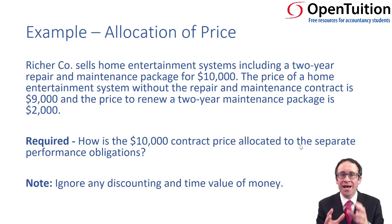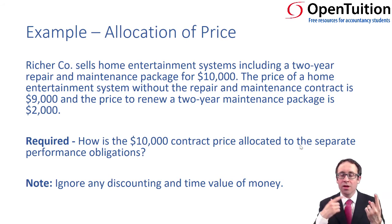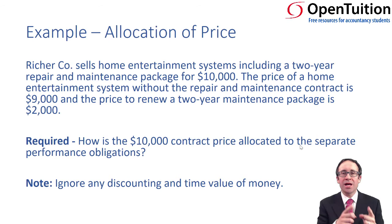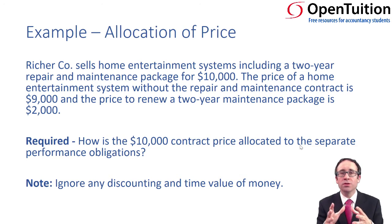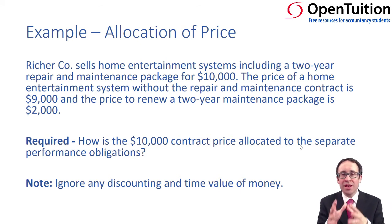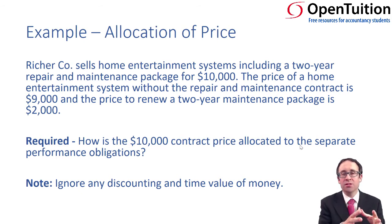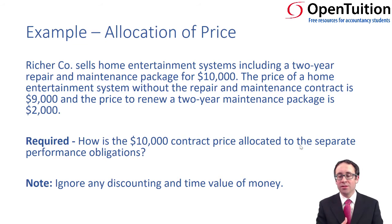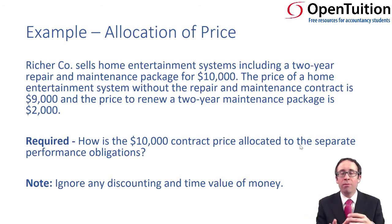We need to allocate the $10,000 transaction price — part of it goes towards the entertainment system, the other part towards the repair and maintenance package. We're going to base it on the stand-alone prices of $9,000 and $2,000. The stand-alone price total comes to $11,000, so $9/11 will be allocated to the goods and $2/11 to the maintenance and repair package, applied to the $10,000 transaction price.